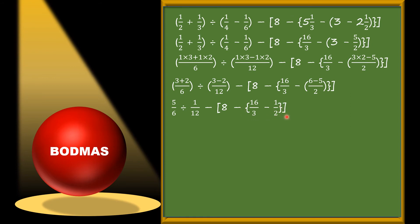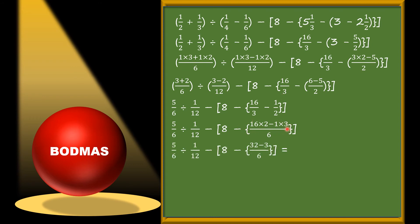In the curly bracket, we do subtraction of fractions and the LCM of 3 and 2 is 6. So 6 is the new denominator: 2×16 minus 3×1 over 6, giving us 32 minus 3. We solve this subtraction to close the curly bracket: 32−3 = 29, so the result is 29/6.